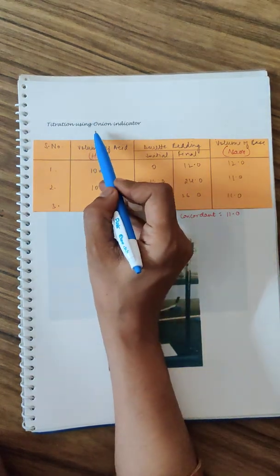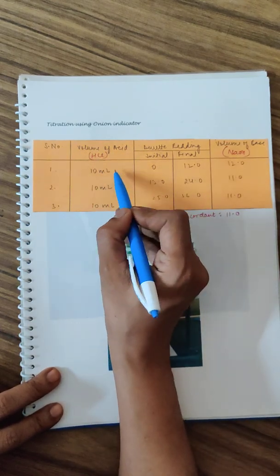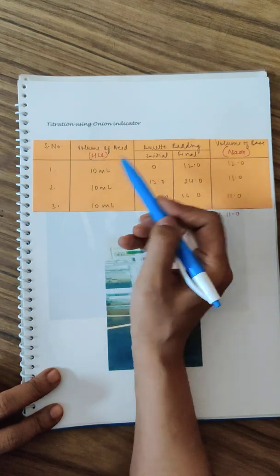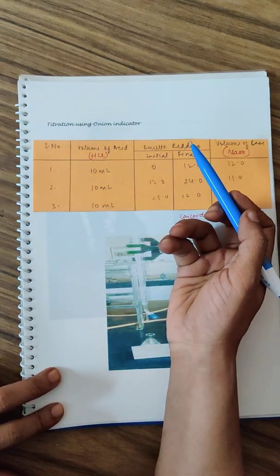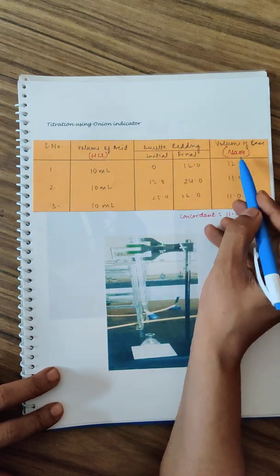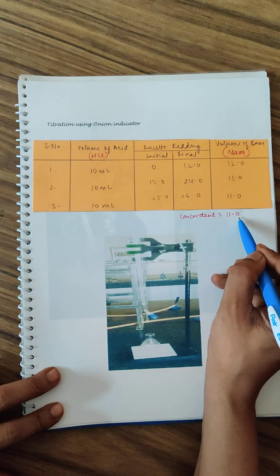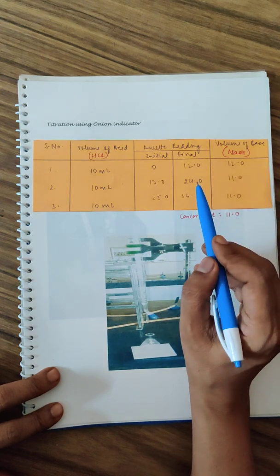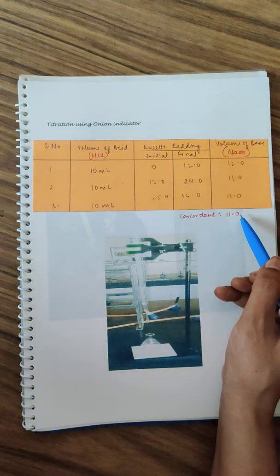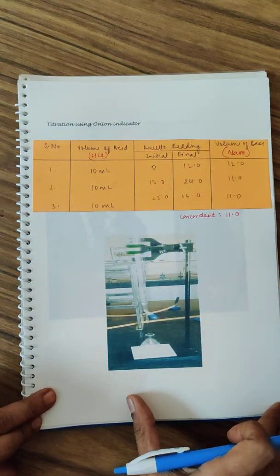The same thing needs to be done with the onion peel indicator. Volume of the acid in the titration flask - take 10 ml of HCl that you have prepared. Add two drops of your onion peel indicator. Burette reading me NaOH hai. Initial and final measure karke, you find that the two same readings are 11, so your concordant value is 11. This is closer to phenolphthalein. The indicator can replace phenolphthalein. You will use some pictures while you were performing the practical.